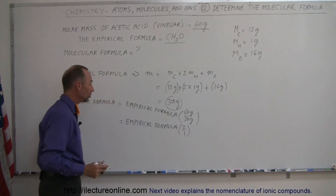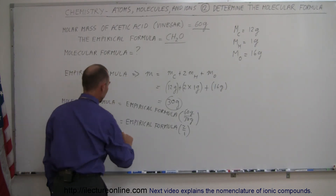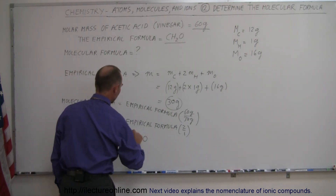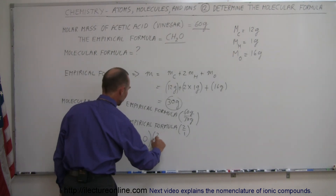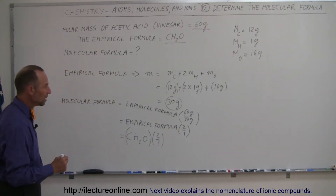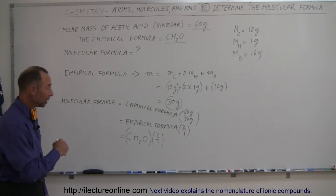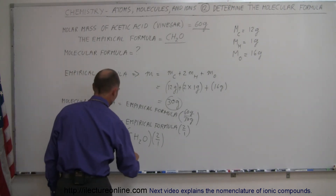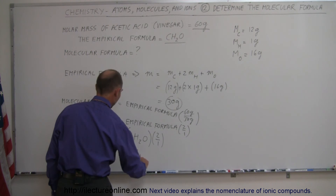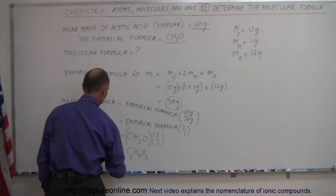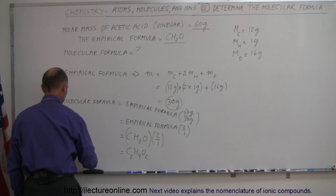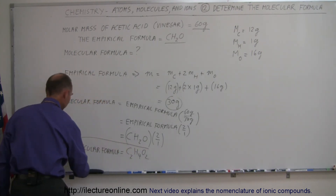So, what was the empirical formula? It was CH₂O, and we're going to multiply it times the ratio of two to one, which means we have twice as many of each element in our molecule. That gives us two carbons, four hydrogens, and two oxygens — and this is the molecular formula of acetic acid, C₂H₄O₂.